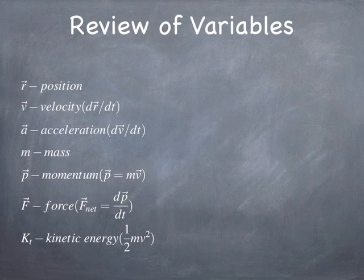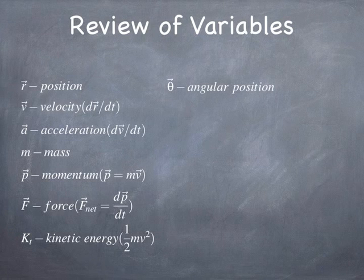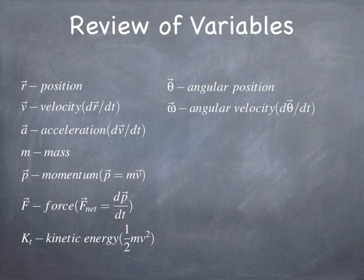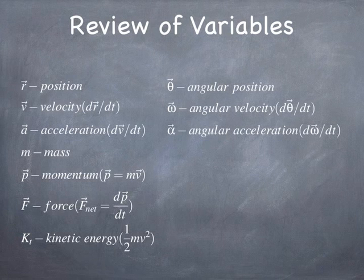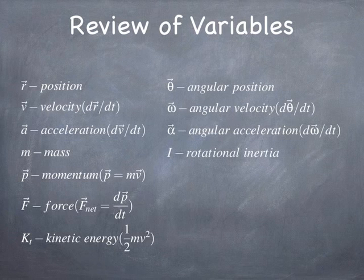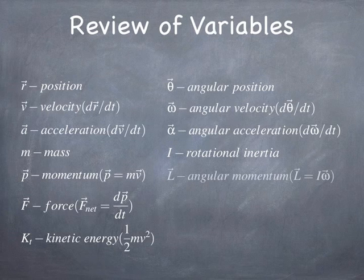And then point out that there's an analogous variable for each of these concepts in translational motion. There's an analogous concept in rotational motion, like angle is sort of analogous to position. Angular velocity is analogous to velocity. It's the rate of change of the angle. Angular acceleration is the rate of change of the angular velocity. Instead of mass, we have this thing called rotational inertia, which sort of behaves like mass in many of the equations. In angular momentum, there's this concept of spin angular momentum, that something can be spinning, and as a result, it can have an angular momentum associated with it.